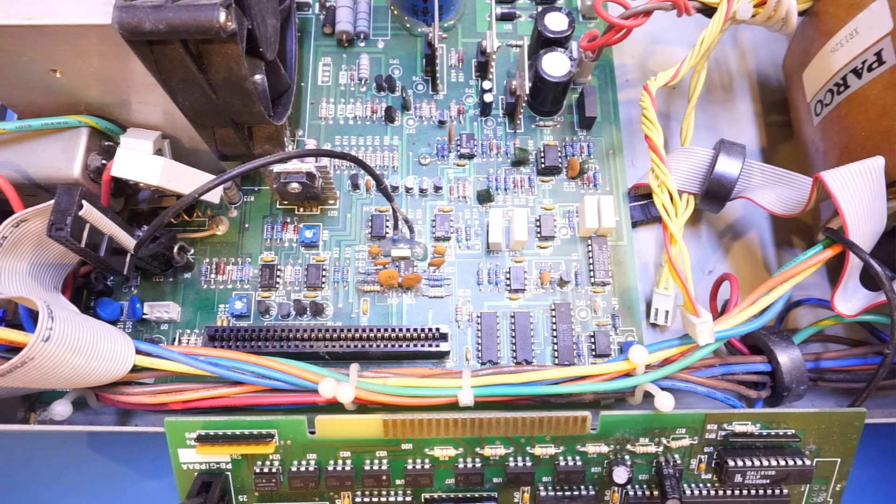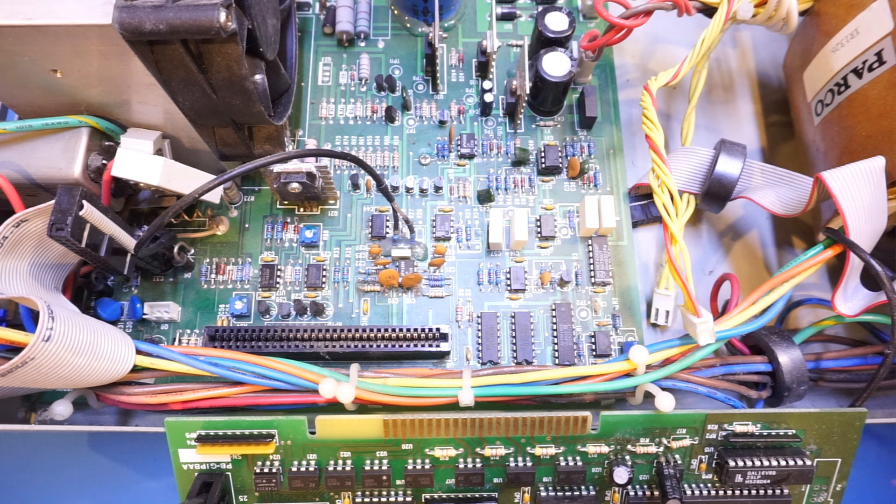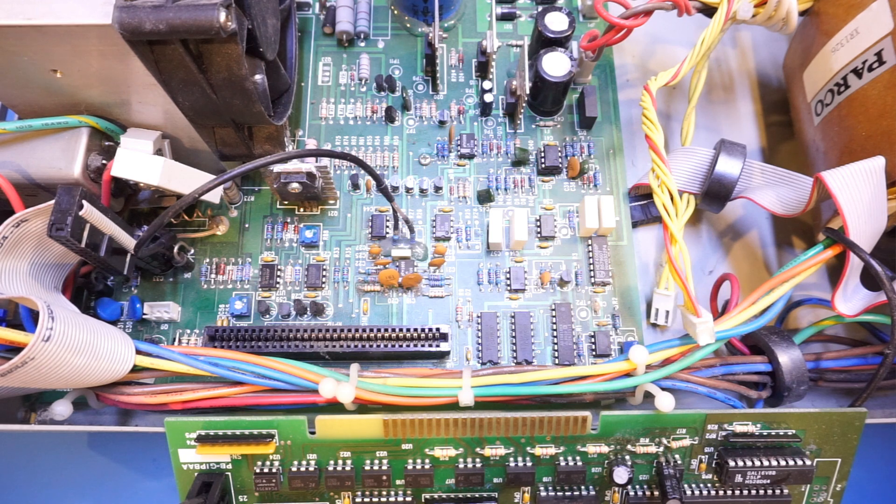Also from the data codes on various chips, we can see that this unit was manufactured roughly the same time as the other Amatree unit, roughly sometime in 1996.